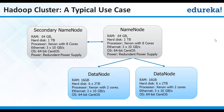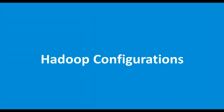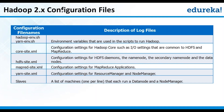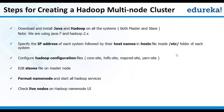Some of the configuration files we need to look into are: hadoop-env.sh, yarn-env.sh, core-site.xml, hdfs-site.xml, mapred-site.xml, yarn-site.xml, and your slaves file. For steps for creating a Hadoop multi-node cluster, first: Hadoop is a Java-based framework, so you need to make sure Java 1.6 and above is installed. You need to download the Hadoop package. Next, specify the IP address of each machine followed by their host names in the hosts file, because there will be a lot of communication happening between the nodes. Then configure your Hadoop configuration files and format the name node.